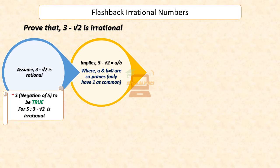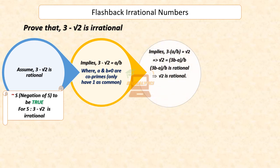Which implies 3 minus A by B equals square root 2. Rearranging the equation, we get square root of 2 equals (3B minus A) by B. Since A and B are integers, we get (3B minus A) by B is rational, and hence square root of 2 is rational.